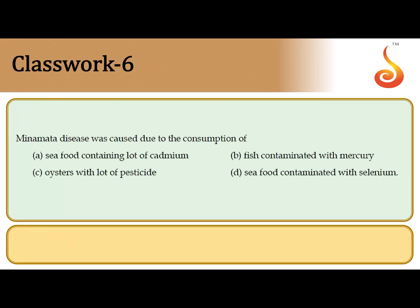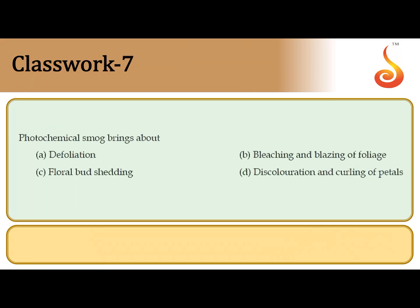The sixth question: Minamata disease was caused due to consumption. It is named after Minamata Bay in Japan. This disease occurred because a heavy metal toxic chemical entered the food chain and affected human beings through consumption of fish contaminated with mercury. So the correct answer is option B: fish contaminated with mercury.